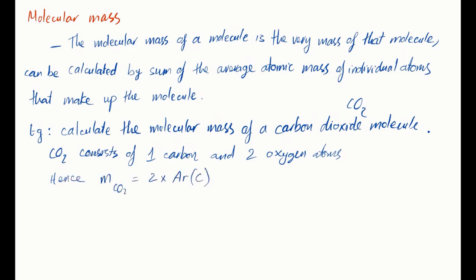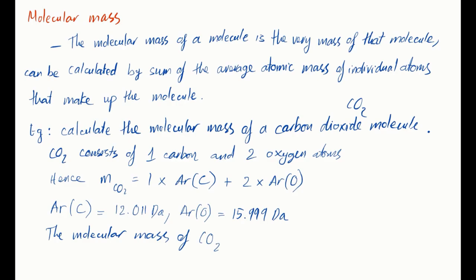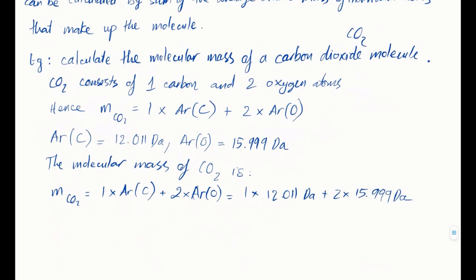From the periodic table, the average atomic mass of carbon is equal to 12.011 Dalton, and the average atomic mass of oxygen is equal to 15.999 Dalton. So the molecular mass of carbon dioxide, CO2, is equal to 44.021 Dalton. That's the molecular mass.